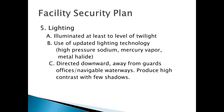Now multiply that by the consequence if we lost it. If we lost that transformer and have a second one that covers half the load, our consequence would be 50% or 0.5. We take 0.25 and multiply it by 0.5, giving us a risk score of about 12.5. That's our risk score for that transformer.